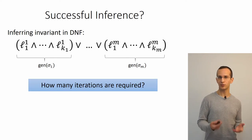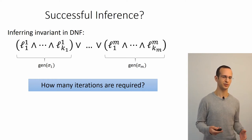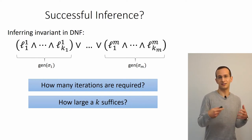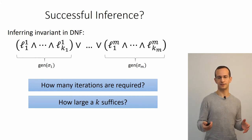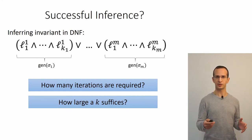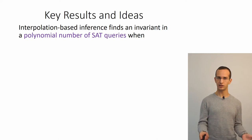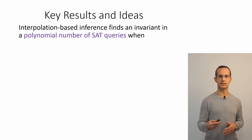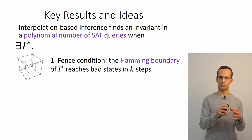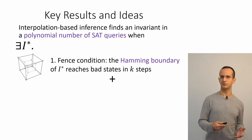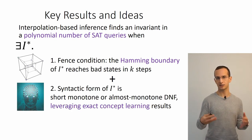How many iterations are required for this algorithm to converge to an inductive invariant? To answer this we also need to answer how large k should be for the algorithm to converge at all rather than reach a candidate that can reach a bad state and restart with a larger k. Our main result is that this algorithm successfully infers an invariant in a polynomial number of SAT calls whenever there exists an invariant that satisfies the fence condition—a property of reachability of the Hamming boundary of the invariant.